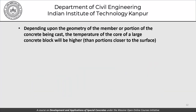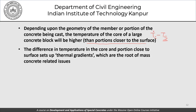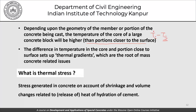Depending on the geometry, the temperature at the core of a large concrete block will be higher than portions close to the surface — this is the Tc minus Ts issue. The difference in temperatures between the core and the surface sets up thermal gradients which are at the root of mass concrete problems. Thermal stress is defined as stresses generated in concrete on account of shrinkage and volume changes due to the release of the heat of hydration of cement.